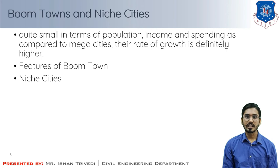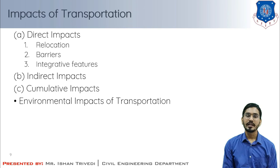That concludes the theory of urban class groups. Now let us understand the impacts of transportation. The impacts of transportation are divided into three categories: direct impact, indirect impact, and cumulative impacts. Direct impact is further classified as relocation, barriers, and integrative features.